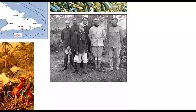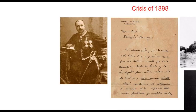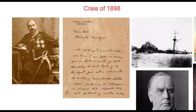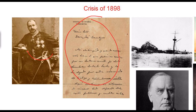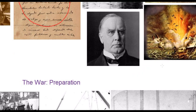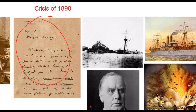America managed to stay out of the conflict until 1898, when a series of crises pulled the United States into war. In February 1898, a letter written by Enrique de Puey de Long, a Spanish minister in Cuba, became public after it leaked to journalists. In the letter, he called President McKinley a weak president and essentially an unfit leader. This infuriated Americans, who saw it as the Spanish government insulting the American president.